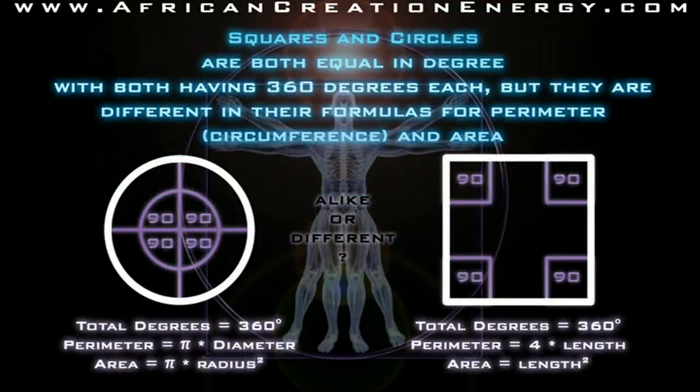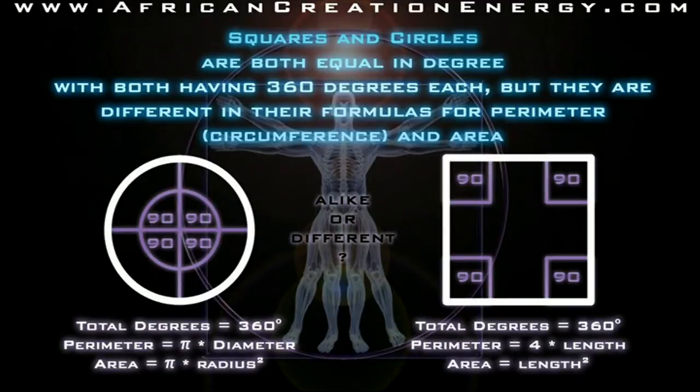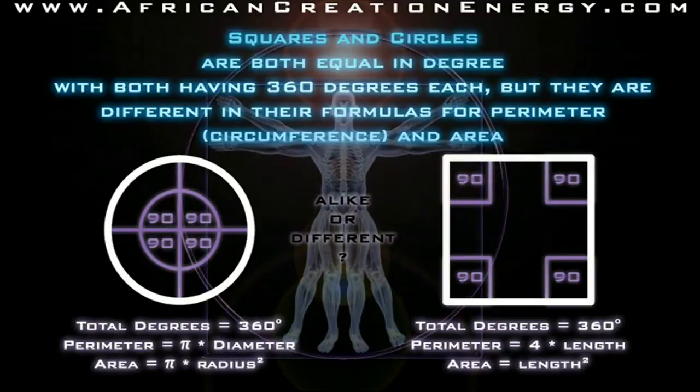When we look at the geometry of circles and squares, we see that both circles and squares are equal in degree, with both having 360 degrees each, but they are different in their formulas for perimeter and area. They are both alike in so far as they both have 360 degrees each, but they differ in terms of their formula for perimeter and their formula for area.